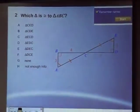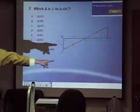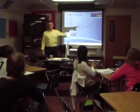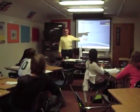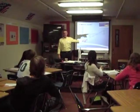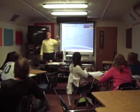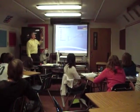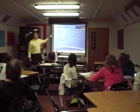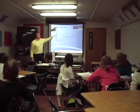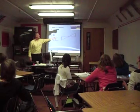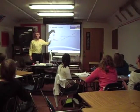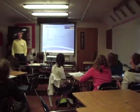Now, what have we got here? Triangles — two triangles. Which triangle is congruent to triangle A, B, C?